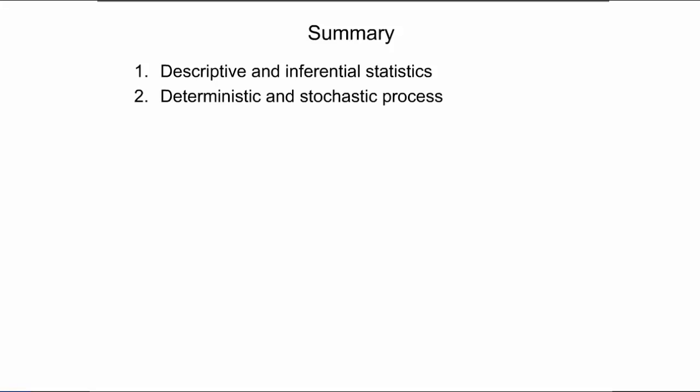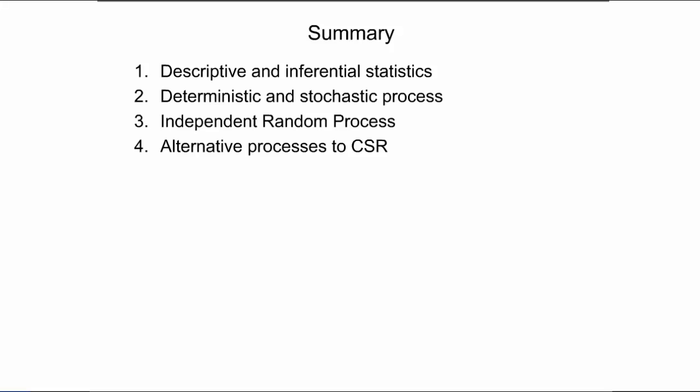This slide summarizes the presentation. It started with an introduction to descriptive and inferential statistics and laid out the differences between deterministic and stochastic processes. Next, an independent random process was introduced as an ideal process that exhibits no first- or second-order effects, thus realizing complete spatial randomness. Finally, the presentation gave an introduction to alternative processes that introduce first- or second-order effects, or both.